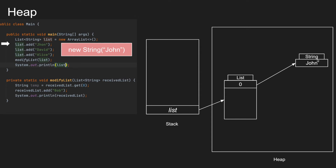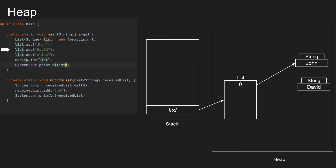On the next line, we are adding the new string 'David'. A new object will be created inside the heap, which will be added at index one of the list. Executing the third line similarly creates a new object pointing at index two of the list.